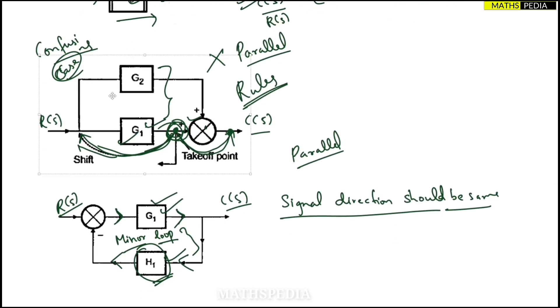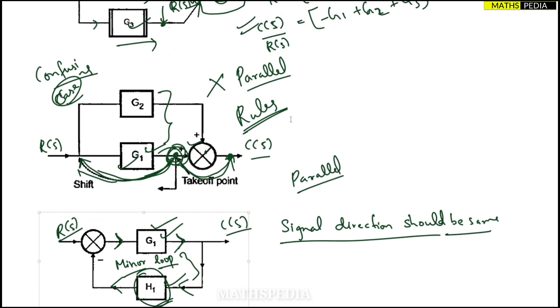So these two cases which are nothing but the confusing cases, so these two are confusing cases, this and this, that you have to understand. Why we are not calling it as these two blocks are in parallel.